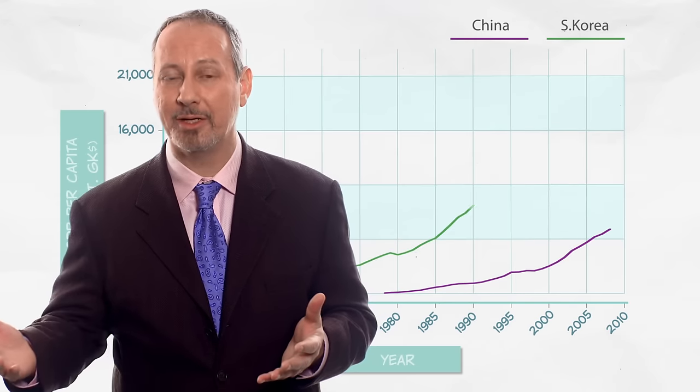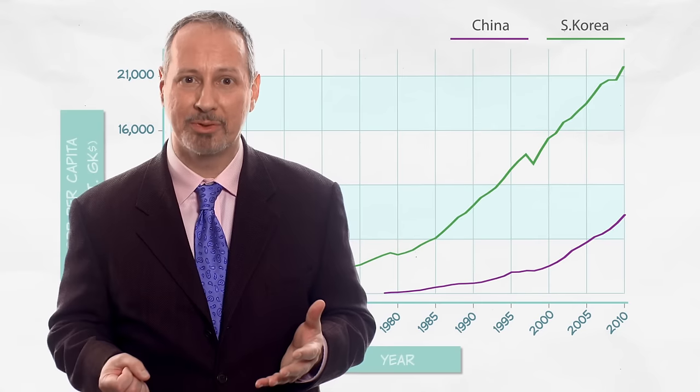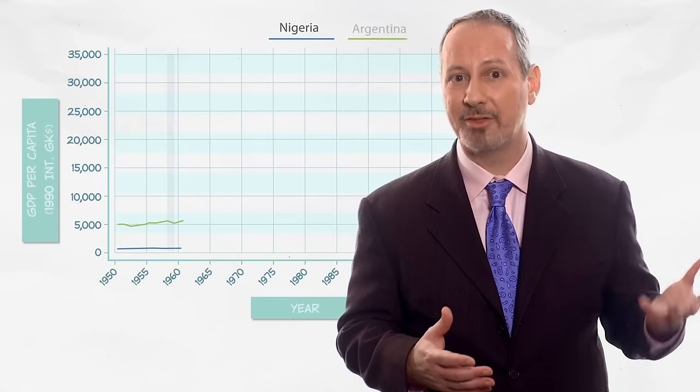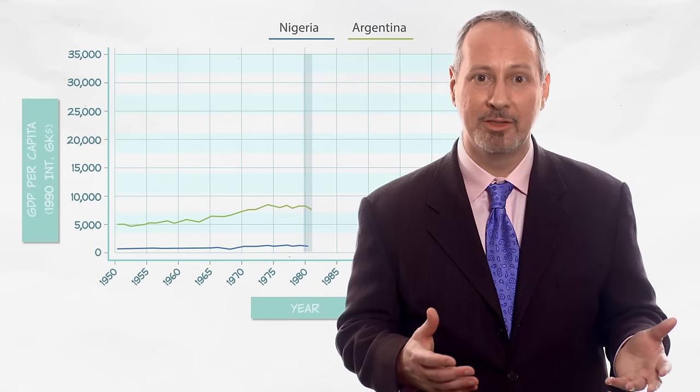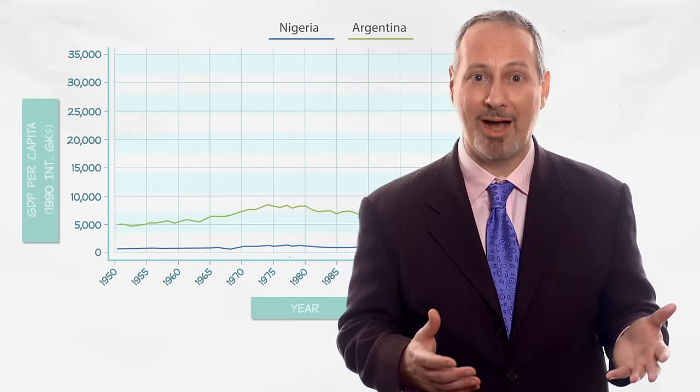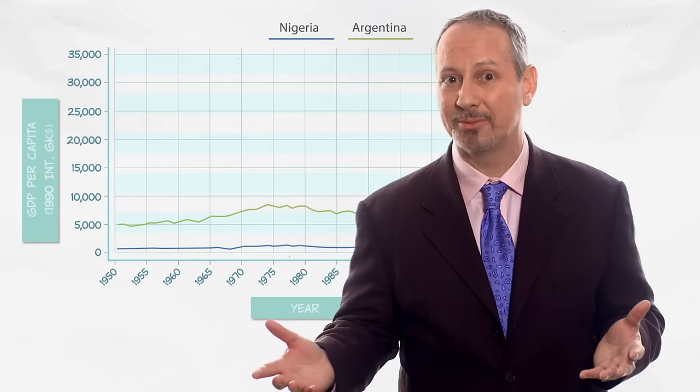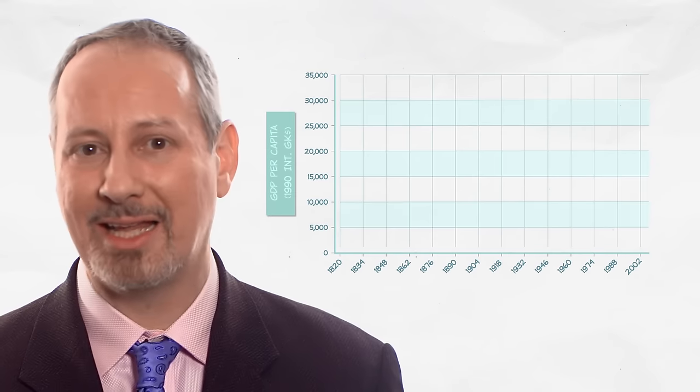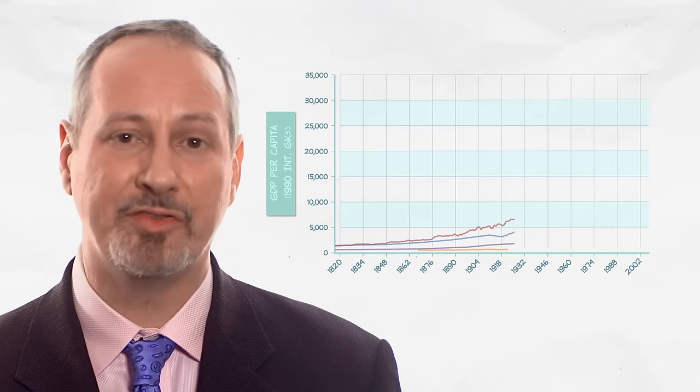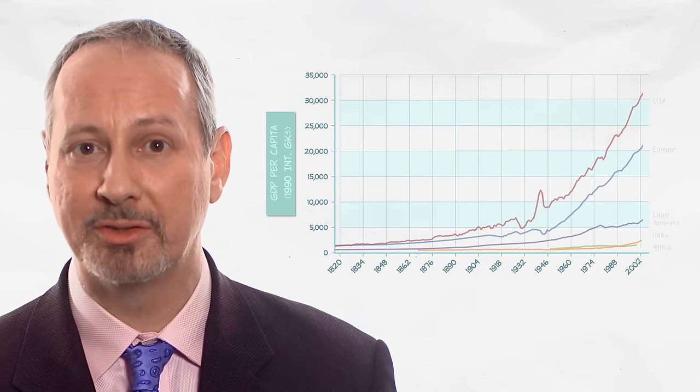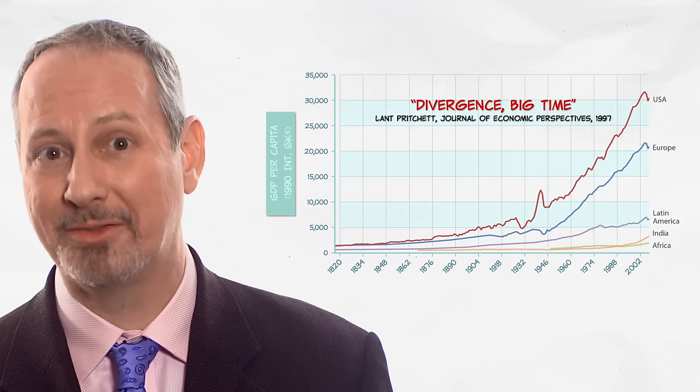Now as we saw before, there are growth miracles. Some countries, like China and Korea, they're clearly catching up. But there's also growth disasters. Countries like Nigeria and Argentina, which are falling further and further behind, or at least not catching up. Indeed, broadly speaking, over the last several hundred years, what we've seen isn't convergence, but divergence big time.